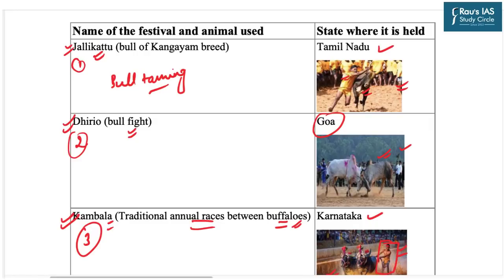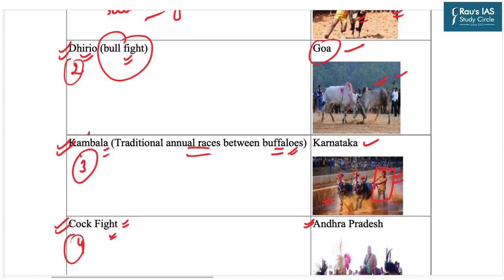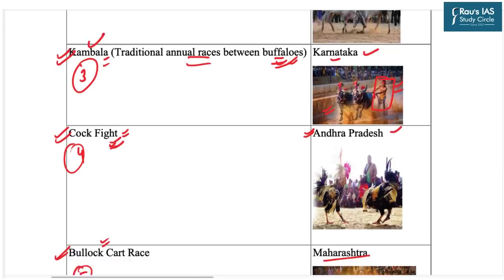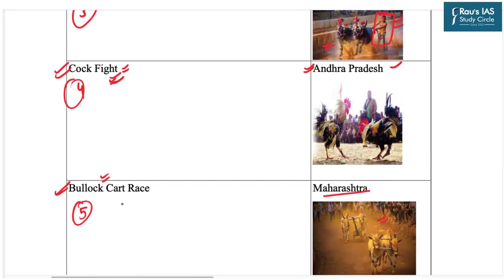To summarize the festivals: Jallikattu in Tamil Nadu; Dhiriyo (bull fight) in Goa; Kambala (annual buffalo races) in Karnataka; Cock Fight in Andhra Pradesh; and Bullock Cart Race in Maharashtra.